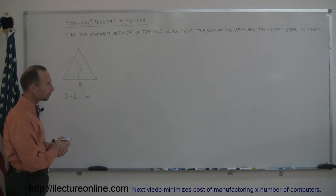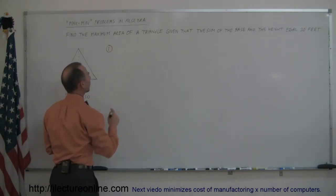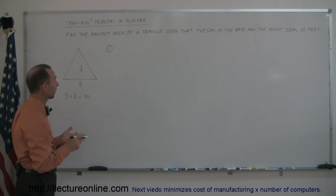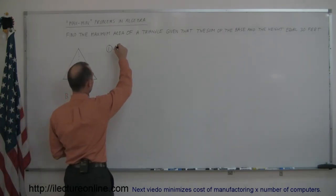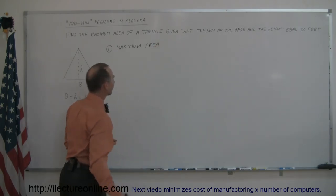The way you want to do max/min problems is you want to follow a certain technique, a certain study procedure, and we usually start out by deciding what's being maximized or minimized. In this case, we're trying to find the maximum area, so maximum area is what we're after. So determine first of all what you're trying to maximize or minimize.